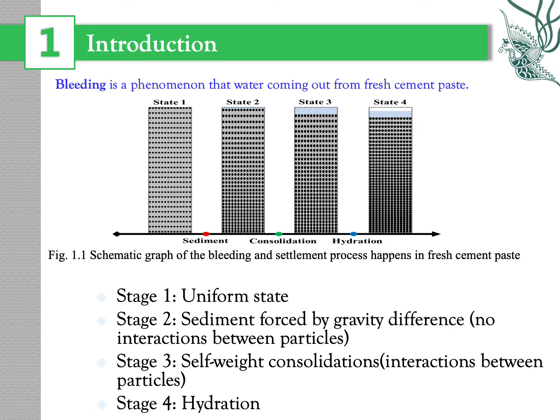Bleeding is a phenomenon where water comes out from the fresh cement paste. Generally, the bleeding process can be divided into four stages. After mixing with water, the fresh cement paste can be considered in a uniform state. Then, because of the gravity difference between cement and water, the second stage of bleeding can be defined as sedimentation — it is like throwing sand into water, where the heavy stuff drops down. After that, the space between particles gets closer and the interactions become dominant, so it can be called self-weight consolidation.